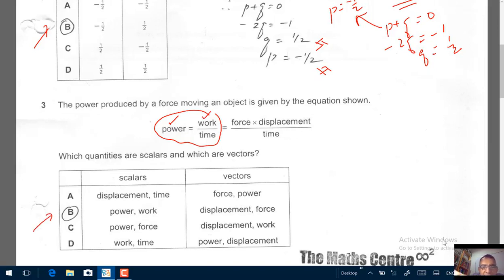Or the other way of looking at it is, you know that force and displacement, they are vector quantities. So you know, the correct response must be B.